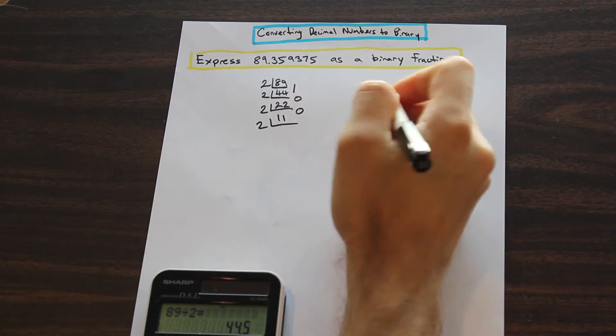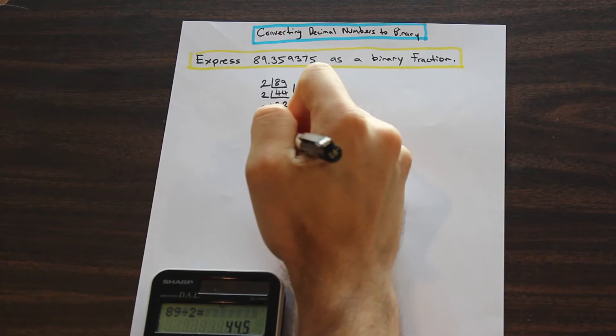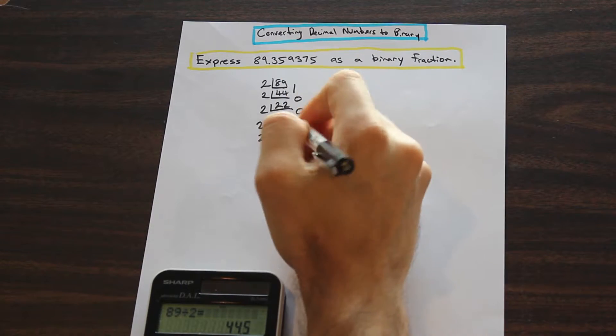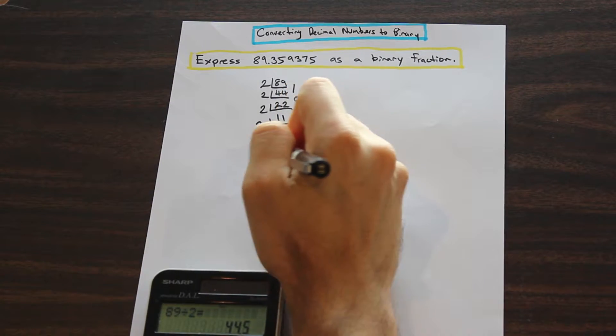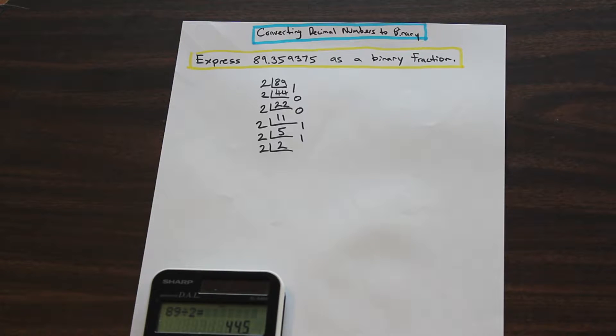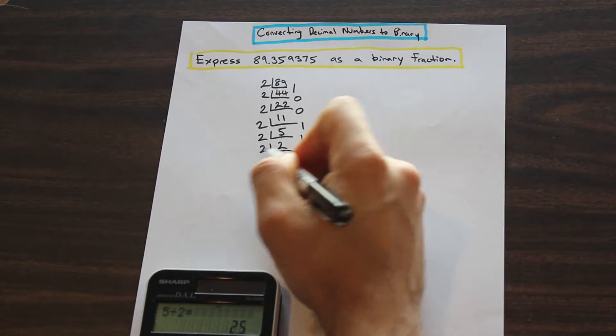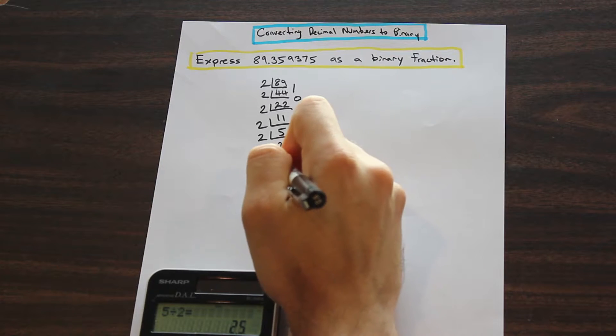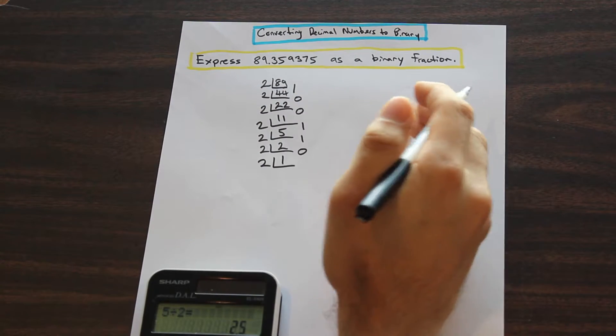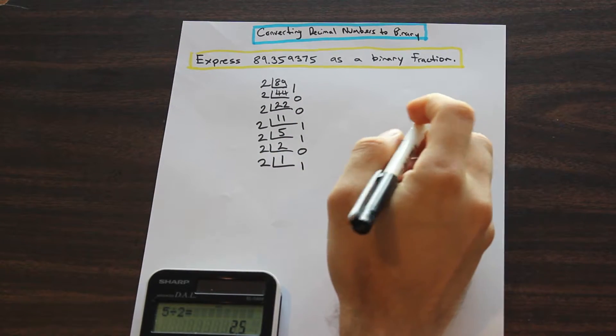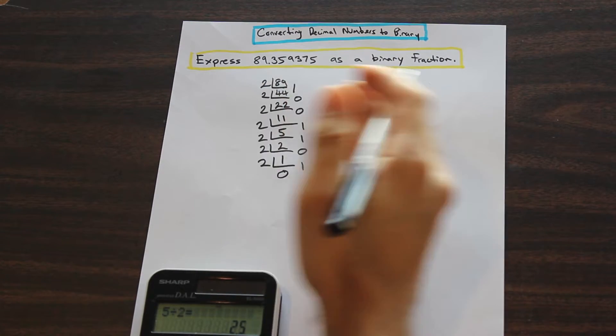We're just going to divide by 2 again. It divides evenly into 22, so we write 0 for the remainder, and 11 here. Divide again. We will have a remainder this time. It divides into 11 five times with a remainder of 1. Let's divide again. That divides in twice with a remainder again of 1. And once again, we have 2 divided by 2, that's going to be 1 with 0 remainder. Let's divide 2 into that again. And when we get to the point where 2 no longer divides into 1, that's going to be a remainder of 1. And then finally, we have 0 at the bottom there.